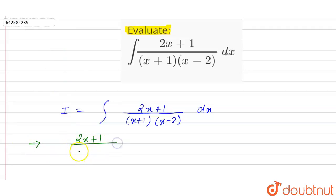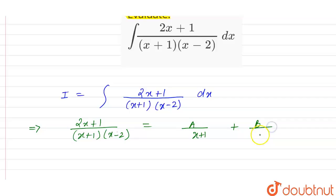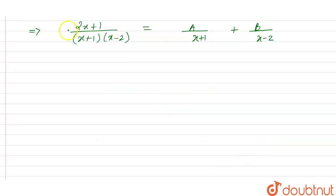We have (2x + 1) upon (x + 1)(x - 2), and we apply partial fractions. So let this be A upon (x + 1) plus B upon (x - 2).